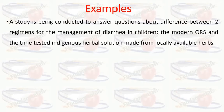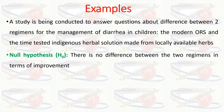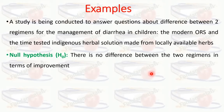For example, a study is being conducted to answer questions about the difference between two regimens for the management of diarrhea in children: the ORS method and an indigenous herbal solution made from locally available herbs. The null hypothesis will be that there is no difference between the two regimens in terms of improvement — we are nullifying the difference between the group treated with ORS and the group treated with herbal medicine.